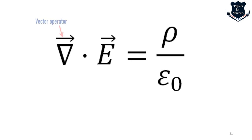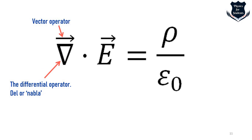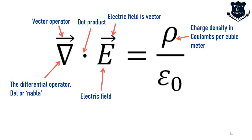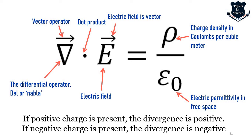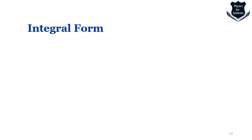Now let's look at the components of the differential form. The del or nabla symbol is the vector differential operator. The dot product with the electric field vector gives the divergence. Rho is the charge density in coulombs per cubic meter, and epsilon-zero is the permittivity of free space. In layman's terms: if positive charge is present, divergence is positive; if negative charge is present, divergence is negative.